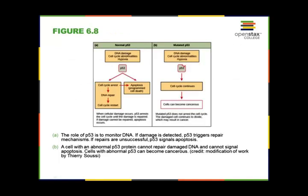This diagram shows the role of normal p53. When DNA damage occurs and the cell cycle has abnormalities, p53 can cause cell cycle arrest and apoptosis — pre-programmed cell death. In a normal cell, p53 causes the cell to destroy itself rather than proceed to uncontrolled division. The other option is to repair the DNA and restart the cell cycle. If the p53 gene is mutated and the cell cycle becomes abnormal, it will just continue, leading to the uncontrolled growth that becomes cancerous.